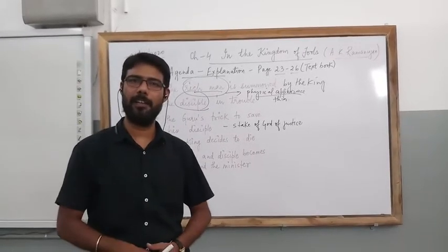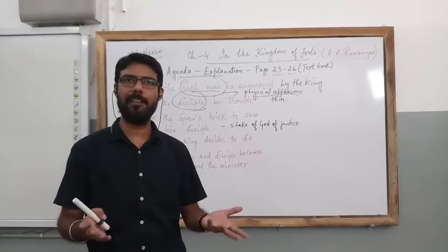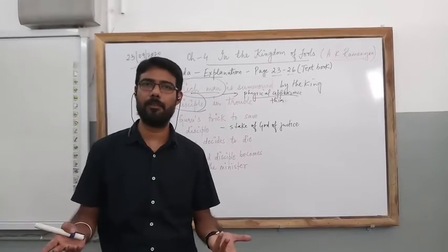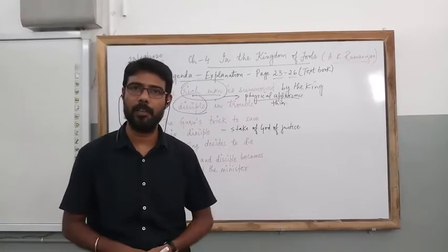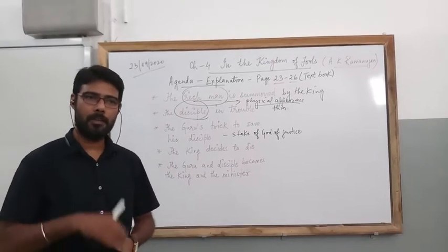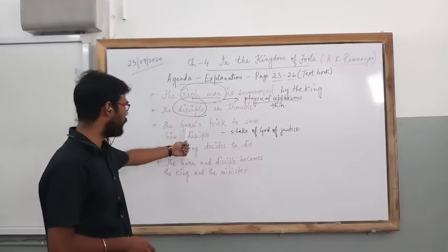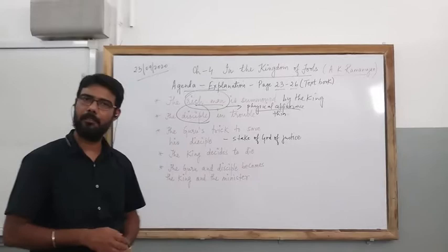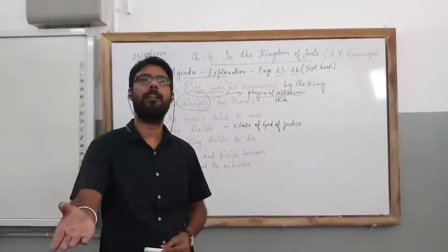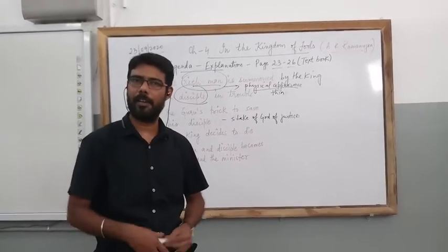Both guru and disciple start fighting. The king and the minister get confused about what was going wrong. So the king came forward and asked the guru why he was fighting with the disciple when he was supposed to be hanged there or executed.